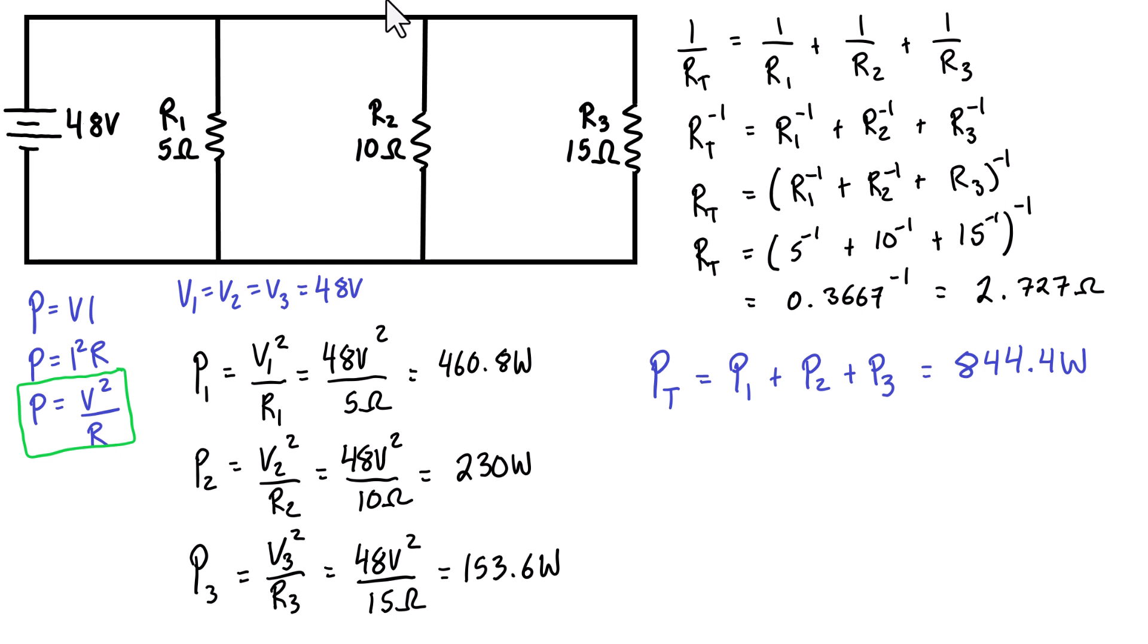The total power consumed by the circuit equals the total power supplied, so it's a good check to check the power supply. We know we're supplying 48 volts and we have a total resistance of 2.727 ohms for the entire circuit. We could basically replace all three parallel resistors with a single resistor that just has 2.727 ohms.